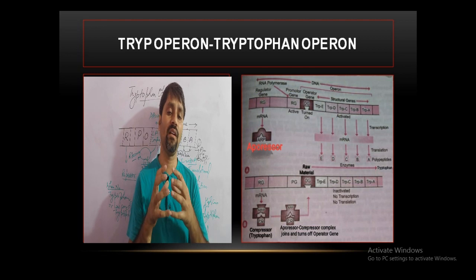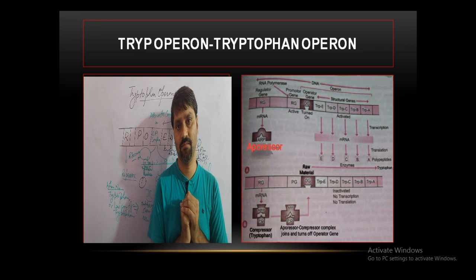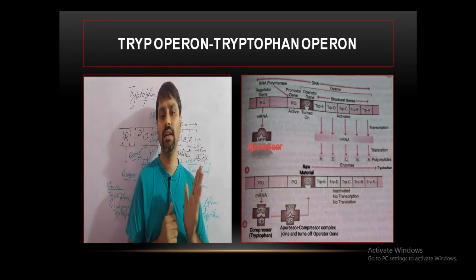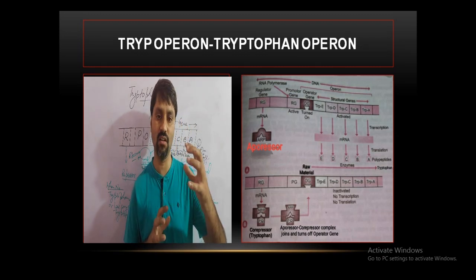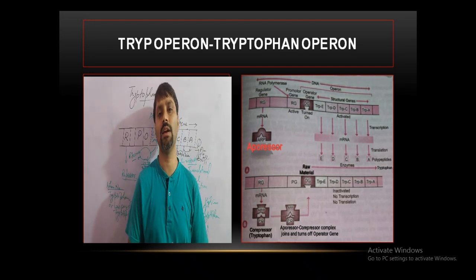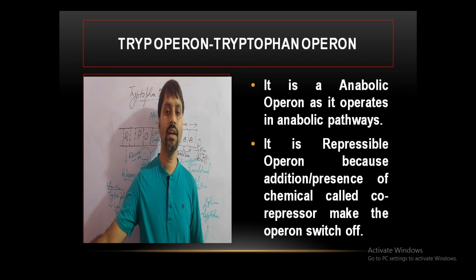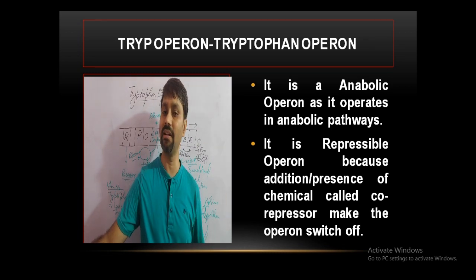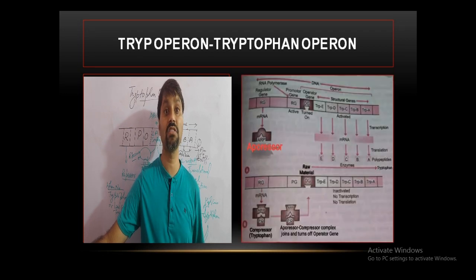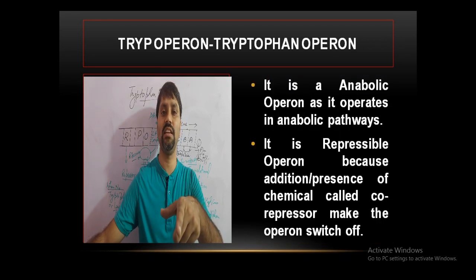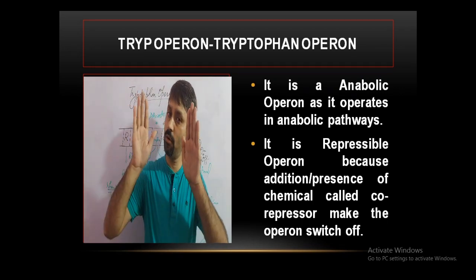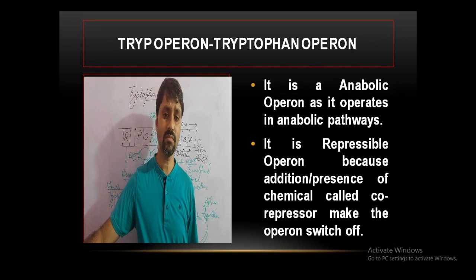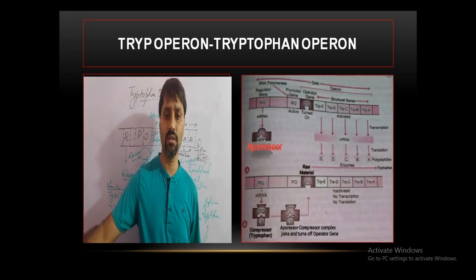So this operon switches off the process when the product accumulates. This is one kind of regulation. The tryptophan operon in prokaryotes is a repressible operon because the presence of tryptophan — acting as the repressor — switches off the operon. This is the tryptophan operon. Now let us look at one more picture for a component-level analysis.